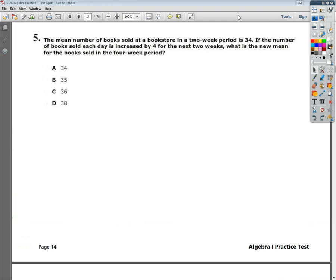The question says the mean number of books sold at a bookstore in a two-week period is 34. If the number of books sold each day is increased by four for the next two weeks, what is the new mean for the books sold in the four-week period?